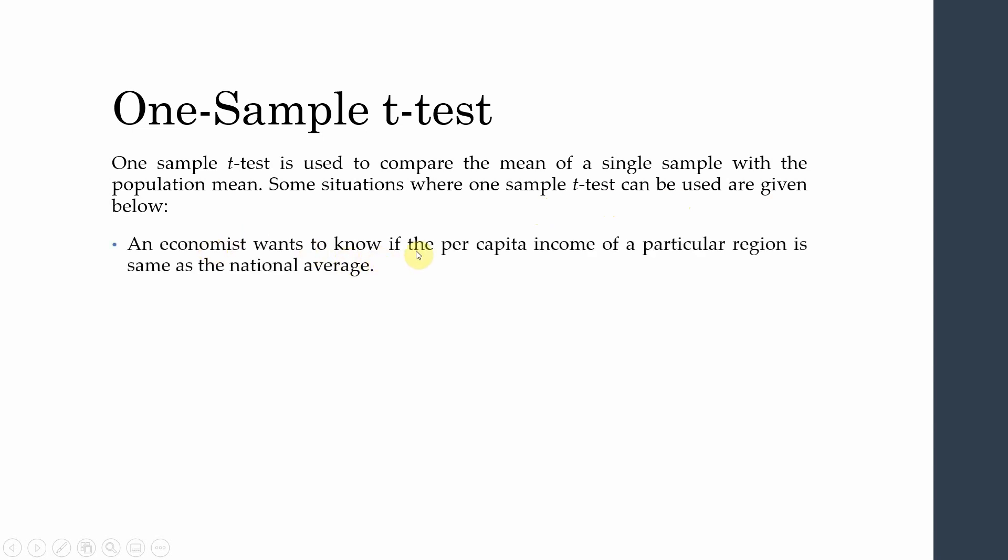An economist wants to know if the per capita income of a particular region is the same as the national average. There is a standard value — say $1,200 or $1,500 — that is the national average. You select a sample from a particular region, collect data from 30 to 40 people, and compare that sample with the national average using a one-sample t-test.